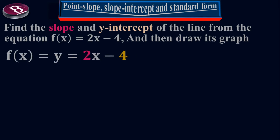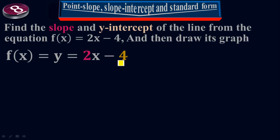The given function is f of x which is 2x minus 4. f of x equals y equals 2x minus 4. We've discussed that f of x equals y — whether you put f of x or y, it is one thing. f of x indicates the value along the y-axis. So you can write f of x equals 2x minus 4 or y equals 2x minus 4.